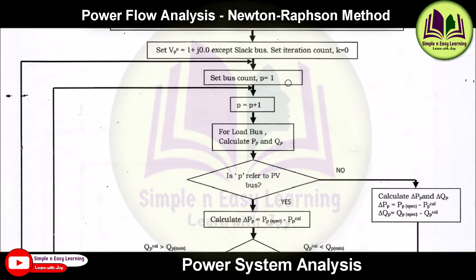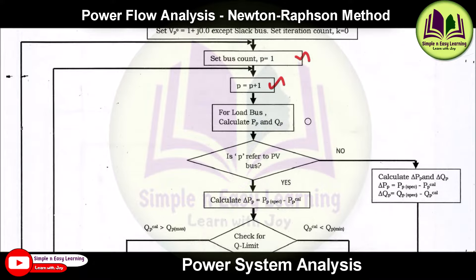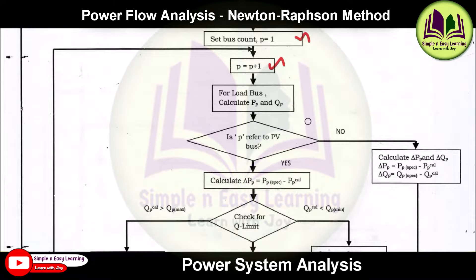Starting with the first bus, set bus count p equal to 1. We know that the first bus is generally the slack bus. So we advance the bus count to p equal to p+1, and then check whether the bus is a load bus or a generator bus.